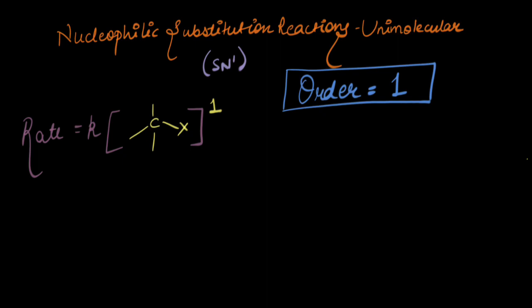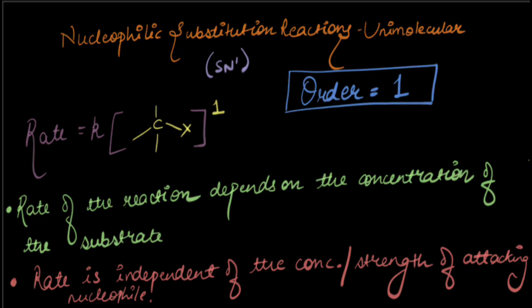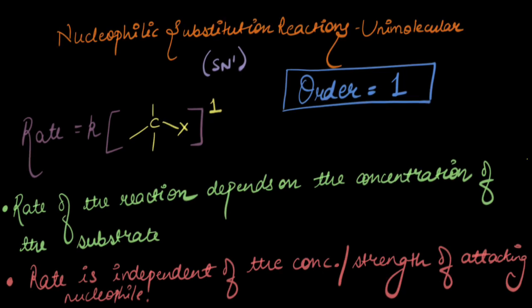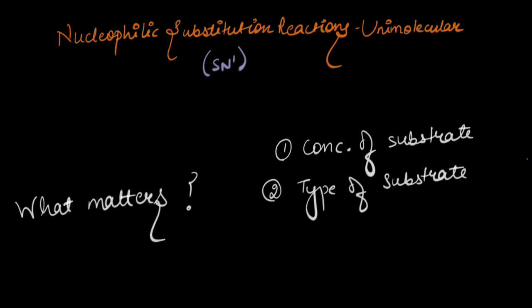Now, since this equation of rate has only the substrate involved, the rate depends on the concentration of the substrate while it is independent of the strength or the concentration of attacking nucleophile. So what matters to me? What should I be focusing on while talking about the rate of an SN1 reaction? The nucleophile hasn't attacked in the rate determining step, so it doesn't matter. The substrate matters to me.